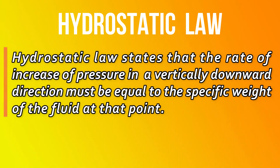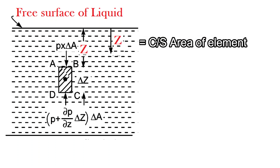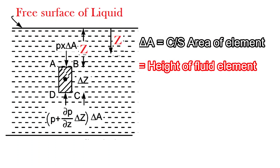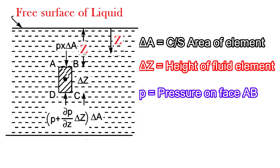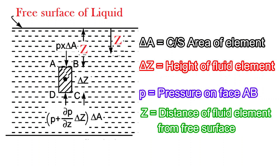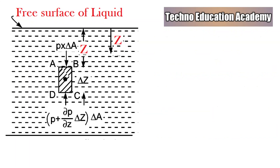To prove that, here we are considering a small fluid element as shown in the figure — a small fluid element at distance Z from the free surface, and the shape of the element is rectangular. Here delta A equals the cross-sectional area of the element, delta Z is the height of the element, P is the pressure or intensity of pressure on face AB, and Z equals the distance of the fluid element from the free surface.